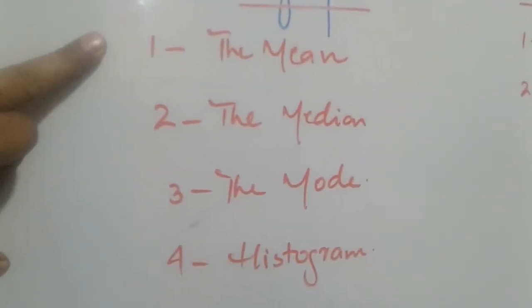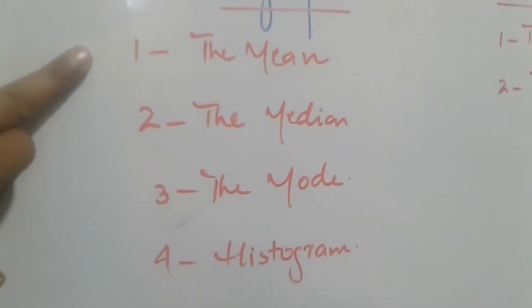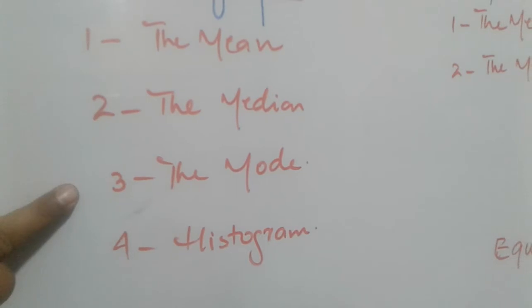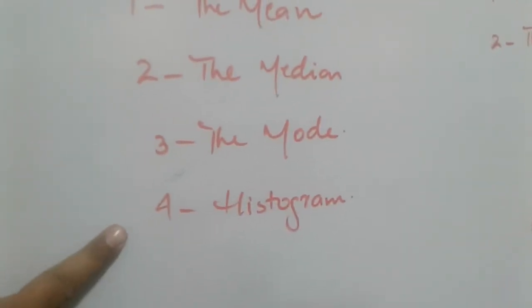So ungrouped data which we will study here: mean, median, mode, and number four is ungrouped histogram.